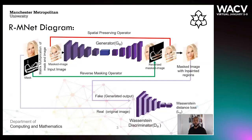Here is an overview of our RMNet framework during training. It has a generator which is composed of an encoder-decoder network and a Wasserstein discriminator that measures the quality of predictions with the ground truth. These networks are jointly optimized end-to-end. The green arrow shows the reverse masking operator and the red arrow shows the spatial preserving operator.